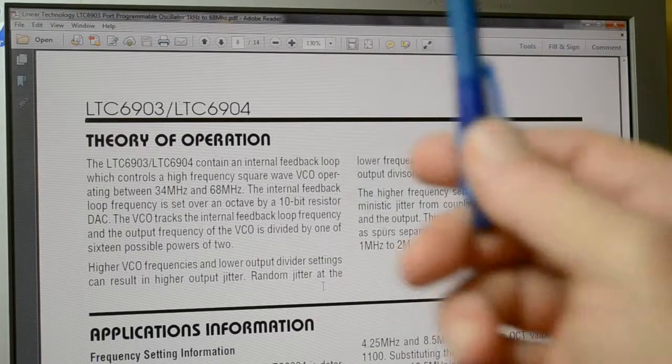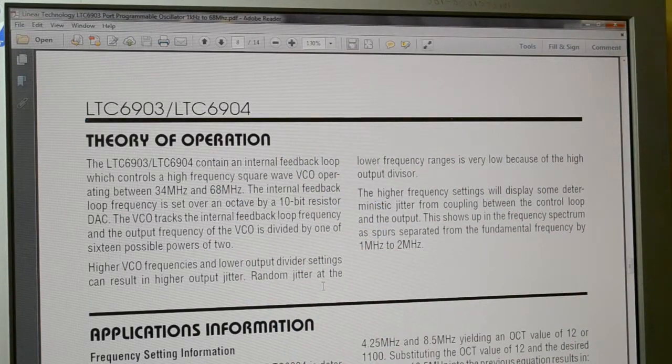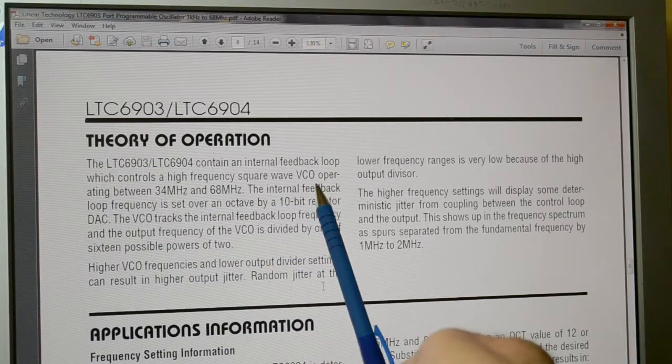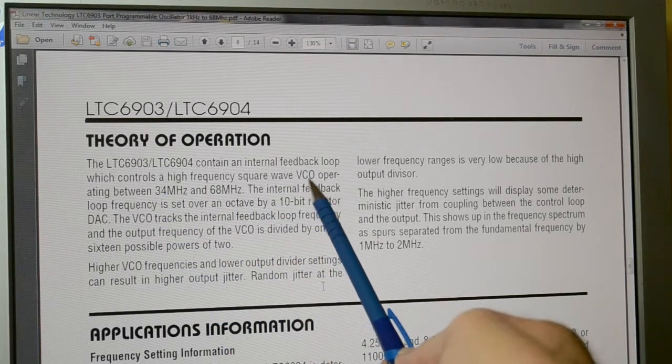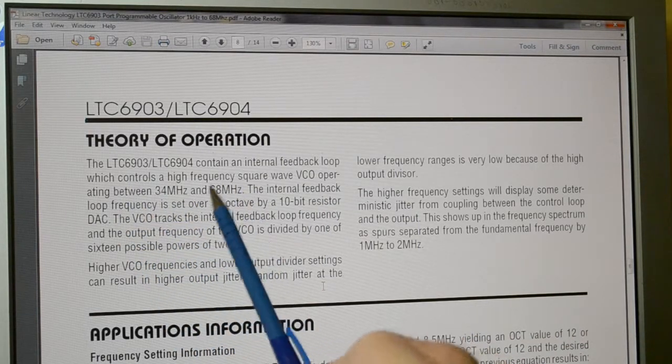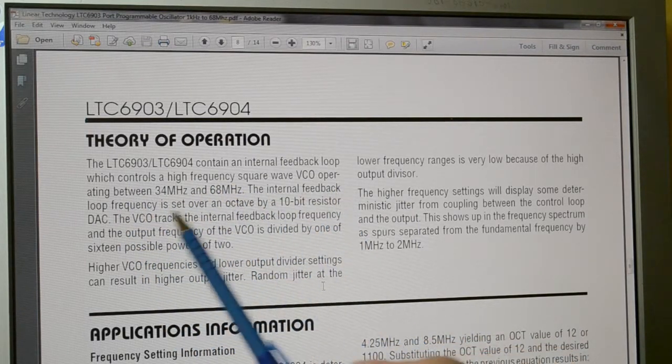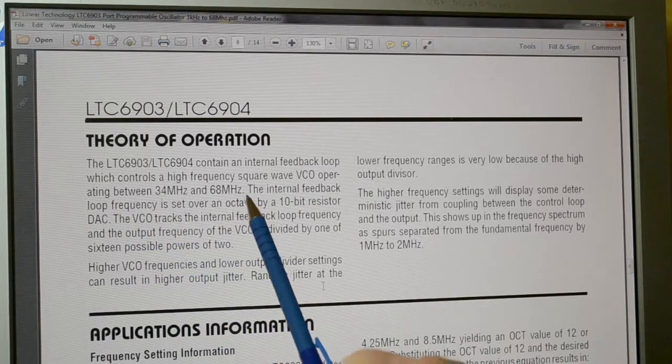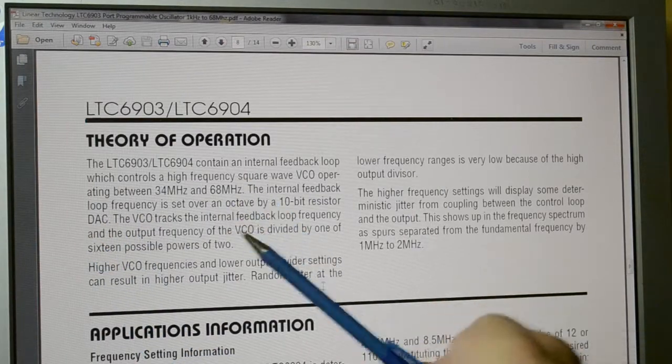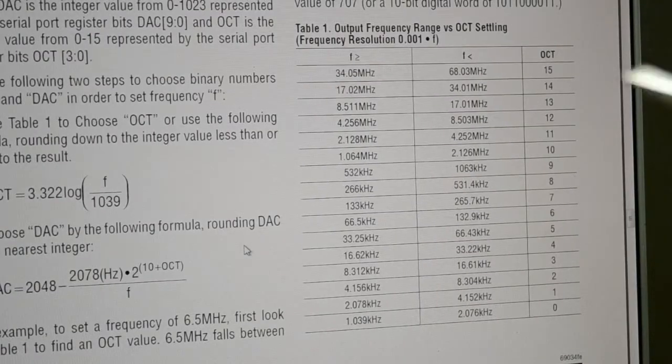This theory of operation is quite important, so I'll give it a quick mention. It says here, the high-frequency square wave VCO, a voltage-controlled oscillator operating between 34 and 68 MHz. The internal feedback loop frequency is set over an octave by a 10-bit register. It's this octave that's important.